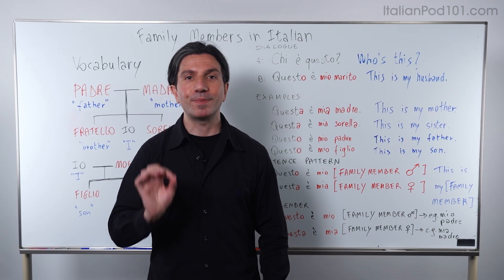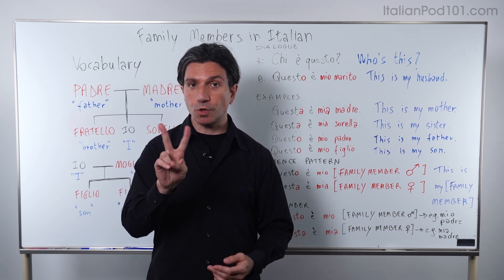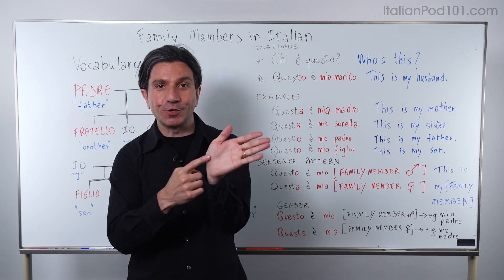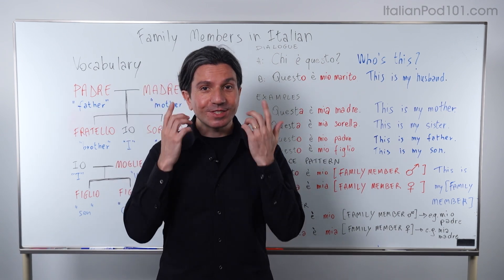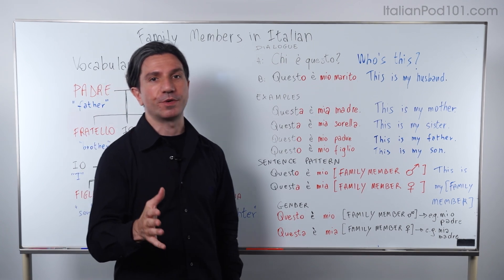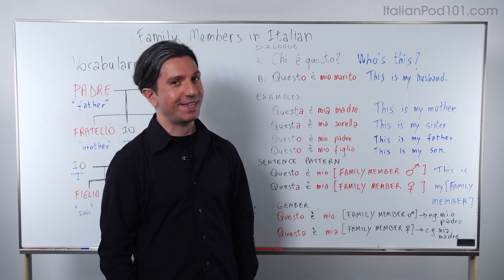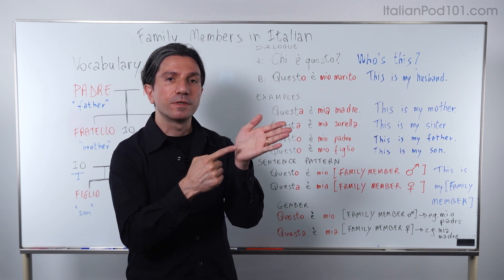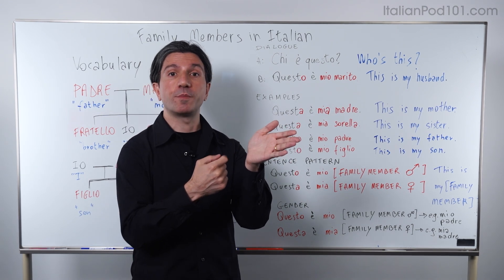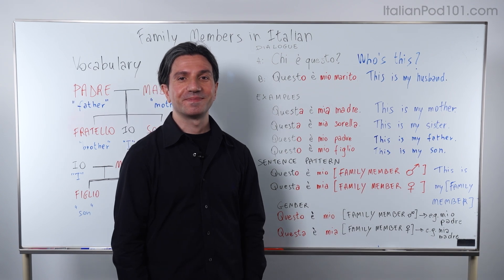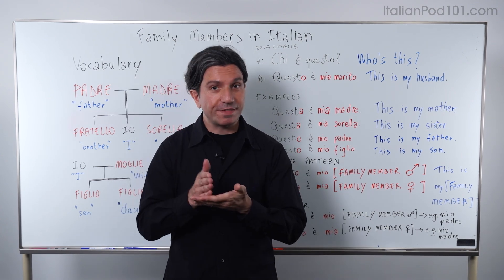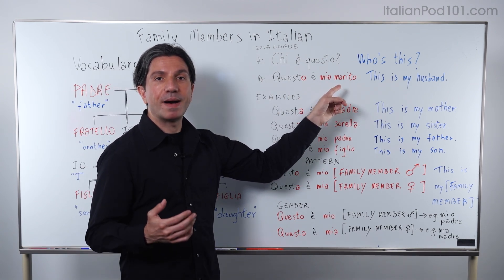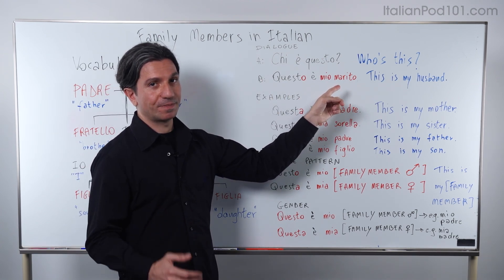Let's hear a simple conversation. Imagine two co-workers are chatting and one of them is showing a picture to the other. Listen to the dialogue and try to figure out who the person is in the picture. Ready? — Chi è questo? — Questo è mio marito. Let's break this down, starting from marito — husband.